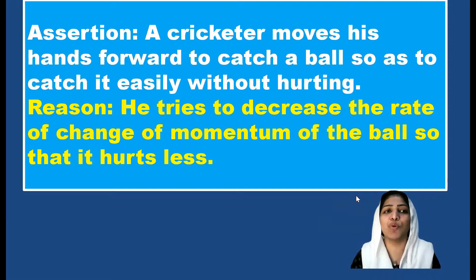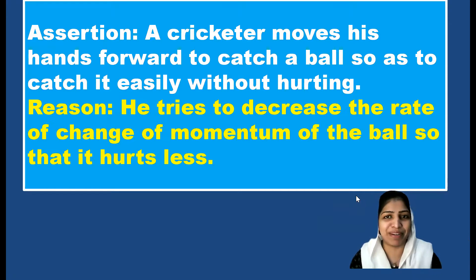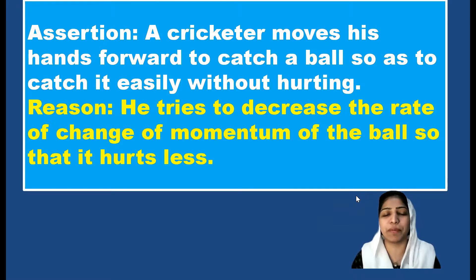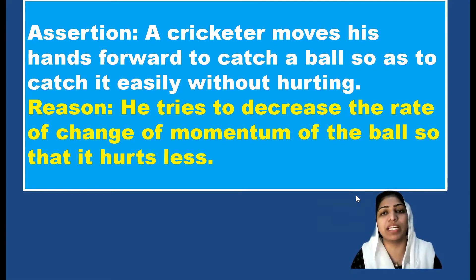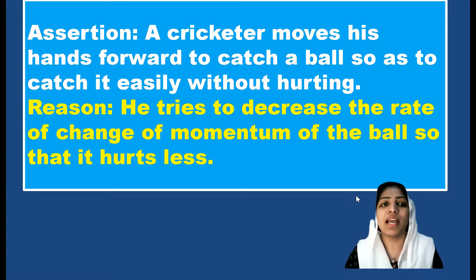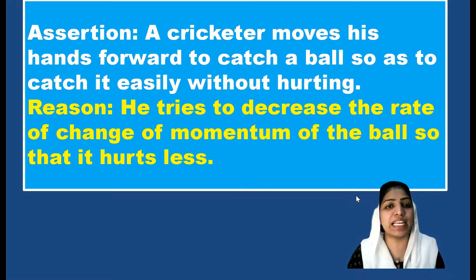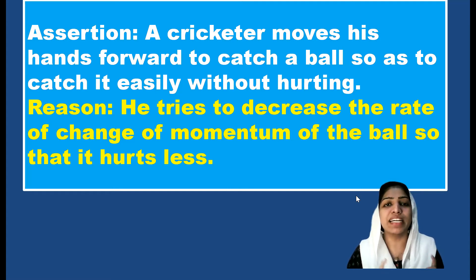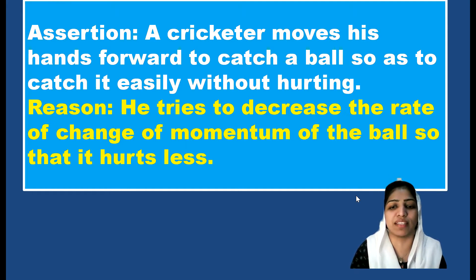A cricketer moves his hands forward to catch the ball so as to catch it easily without hurting. However, the correct action is that a cricketer moves his hand backward while catching. So the assertion is false. The reason is that the cricketer tries to decrease the rate of change of momentum of the ball so that it hurts less, which is correct. So the assertion is false but the reason is true.